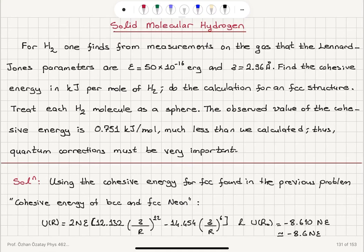Solid molecular hydrogen. For H₂, one finds from measurements on the gas that the Lennard-Jones parameters are ε = 50×10⁻¹⁶ erg and σ = 2.96 Å.